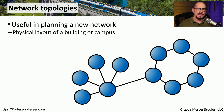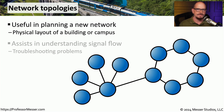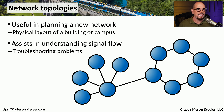Networks can connect to each other in many different ways. In this video, we're going to look at a number of different network topologies and how those different network topologies can be deployed in an enterprise network. This can be very useful during the planning process where you're designing the network, and also during the troubleshooting process so that you can visually see how one network might connect and send data to another network.